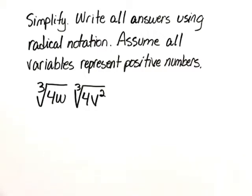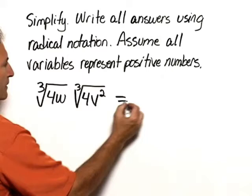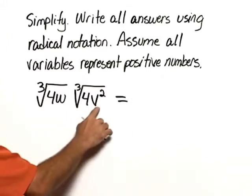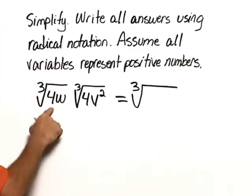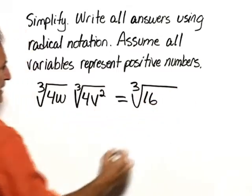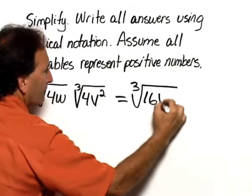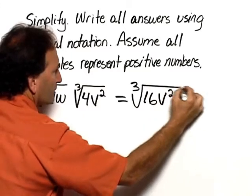So first let's combine the 4w and 4v squared under one radical. So this would be the cube root of, well 4 times 4 is 16, and then we would have v squared times w.